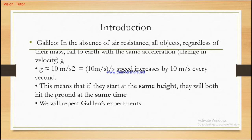The gravitational acceleration averages 9.81 m/s². We approximate it as 10 m/s². So with 10 m/s², for a time difference of one second, the velocity will increase by 10 meters per second. Regardless of their mass, all objects will have the same acceleration, which is gravitational acceleration: 10 m/s².